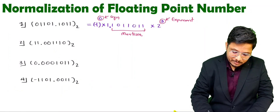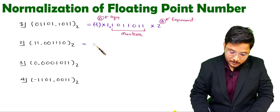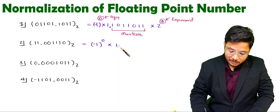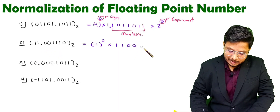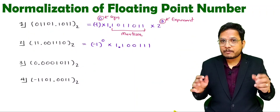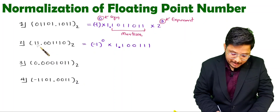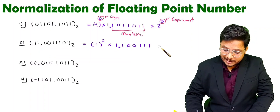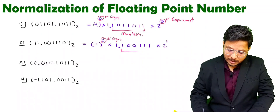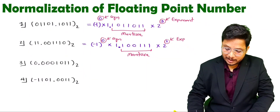In the second question, we are having 1 1 0 0 1 1 1 and this is positive. So for positive, minus 1 to the power 0 is the sign. Then 1 point 1 0 0 1 1 1 — that is how we normalize it. We provide the fraction here as one point something. By how many digits are we jumping towards the left? By one digit, so into 2 to the power 1. So 0 is the sign, 1 0 0 1 1 1 is the mantissa, and 1 is the exponent.